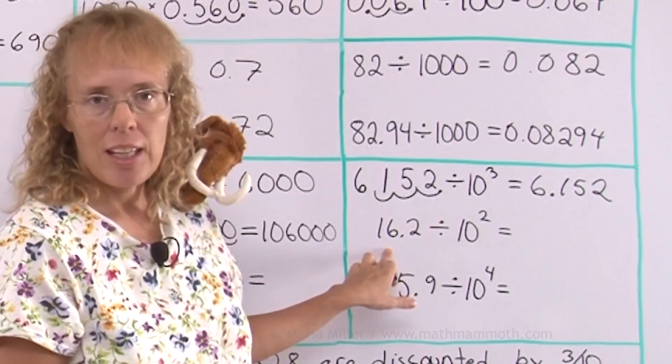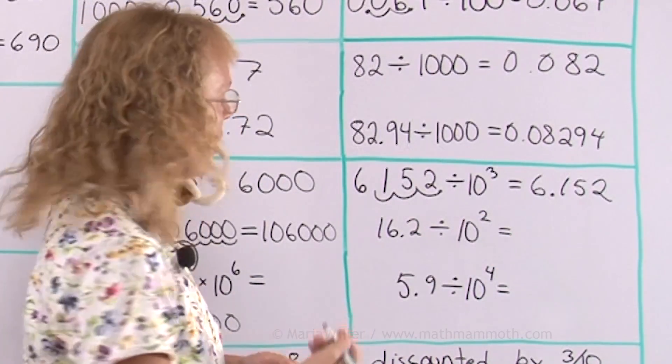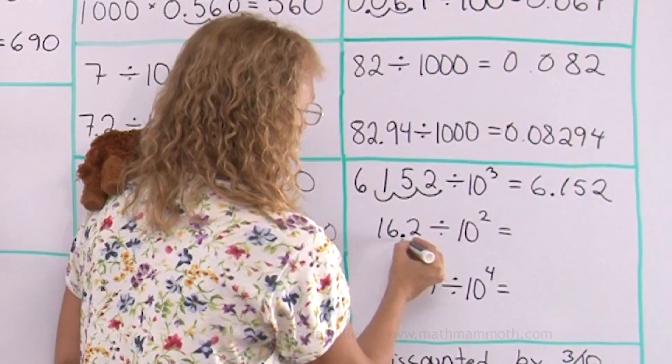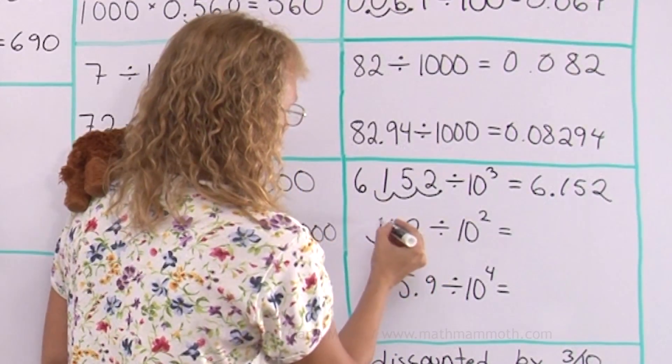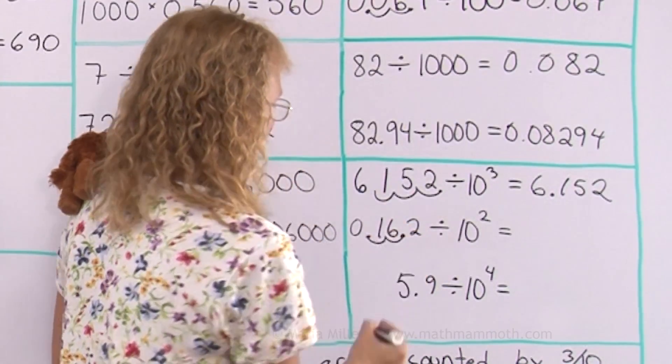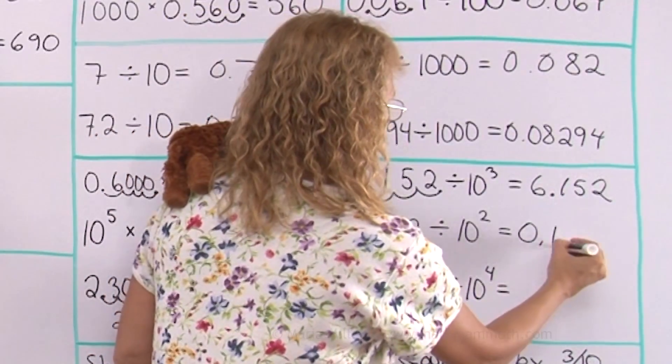Here, divided by 10 to the second power or 10 squared, it means move the decimal point two steps here and here. Let's put the zero here. Like that. 0.162.